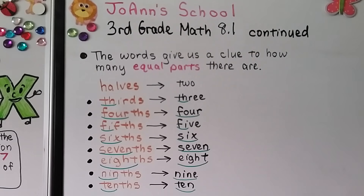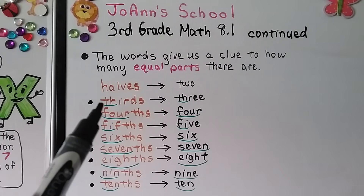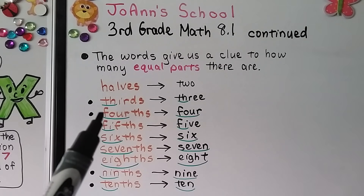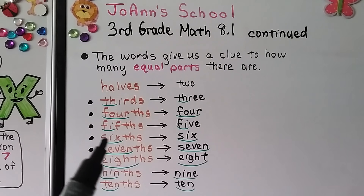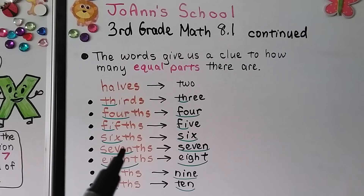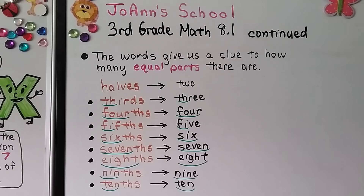The words give us a clue to how many equal parts there are. Halves is just two. But look at the word thirds — it starts with TH, just like three does. And fourths — you can actually see the word four in there. So you would know that would be four equal parts. Fifths starts with FI, just like five. Six actually has the word six in it. So does sevenths and eighths — they have the words seven and eight in them. Note how eighths is spelled H-T-H-S, so there are two H's there. Ninths has N-I-N like in nine, and tenths has the word ten in it. And we could just continue on with elevenths, twelfths, and so on.